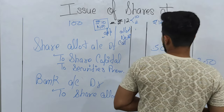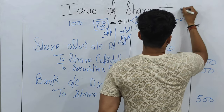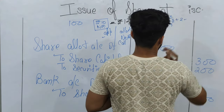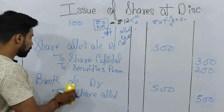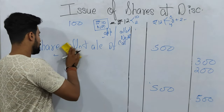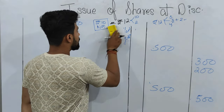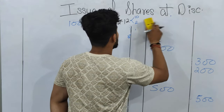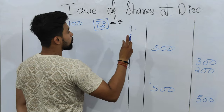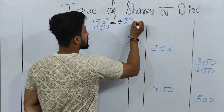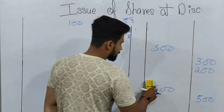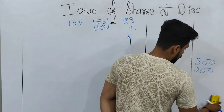Now we will discuss the third case — issue of shares at discount. Issue of shares at discount means when a company issues shares less than the nominal value of a share. For example, if a company issues a Rs. 10 share at Rs. 8, then the Rs. 2 difference is the discount offered by the company to the public.